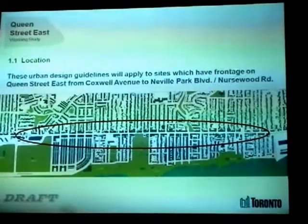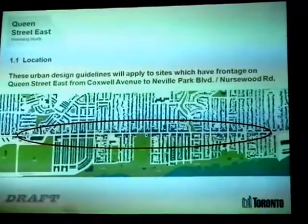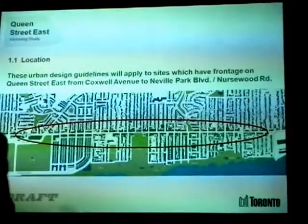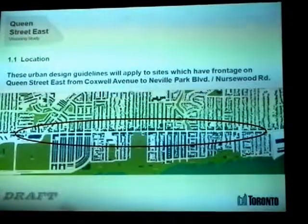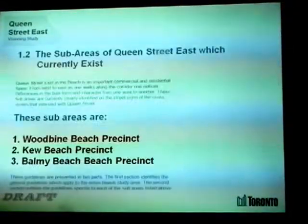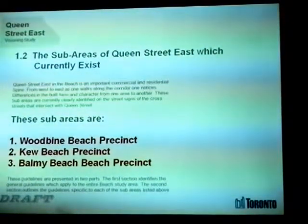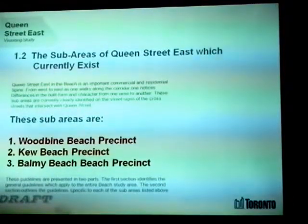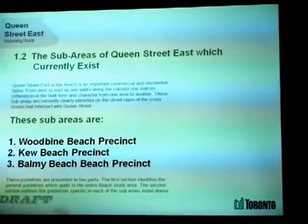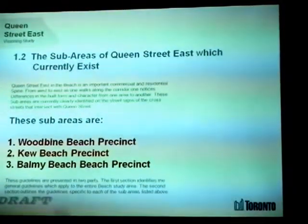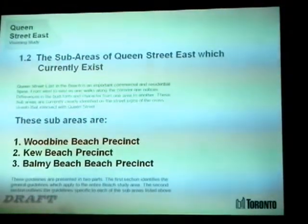The urban design guidelines apply to sites along Queen Street, both north and south, from Coxwell to the west, to Neville Park and Nursewood in the east. We had a lot of discussions about sub-areas, and certainly there was no conclusion. Some people said no sub-areas, some said five, some said three, some said two. But there was a consistent idea about thinking about the different beaches and making connections with them as definitions of sub-areas within the study area.